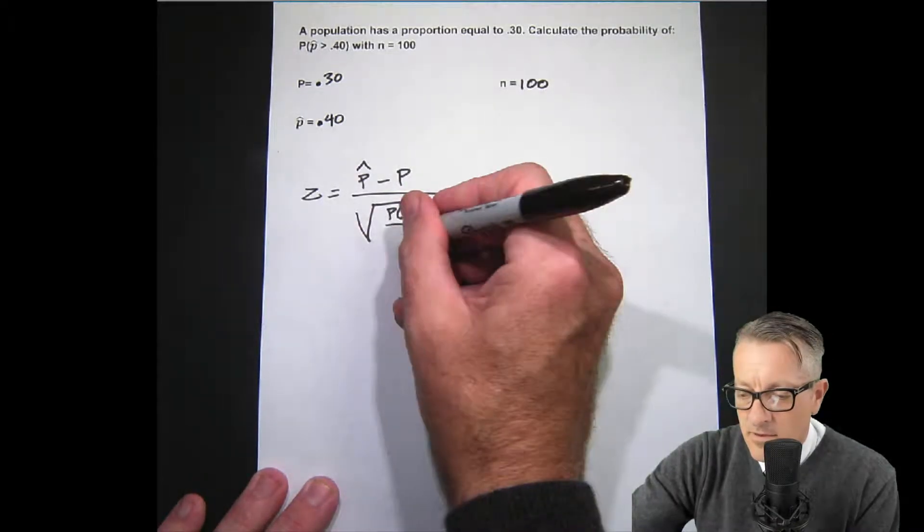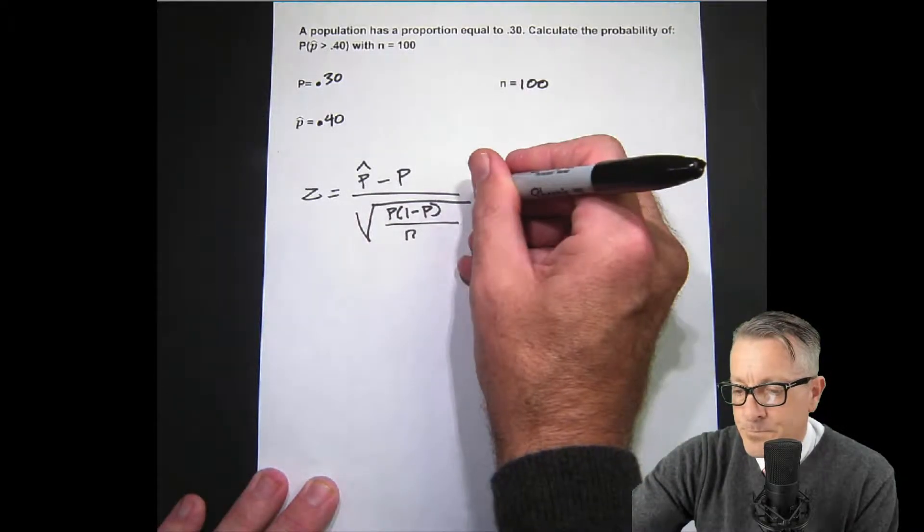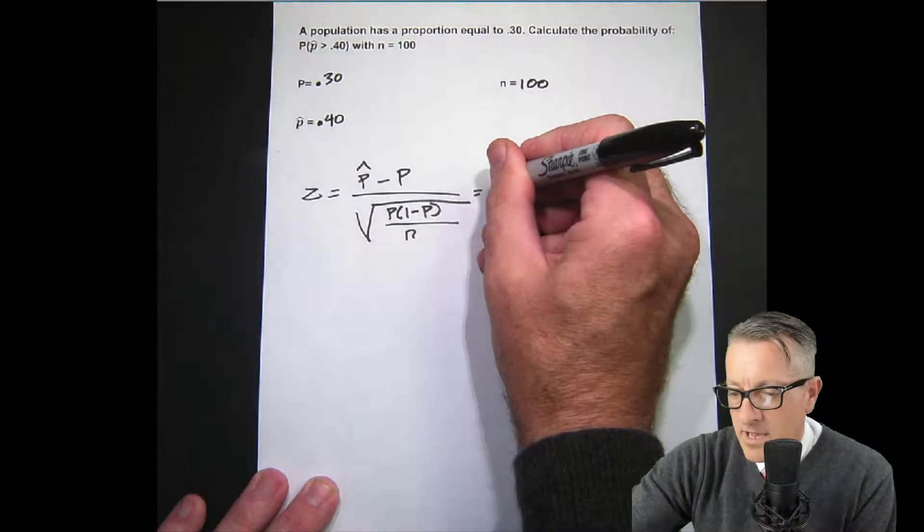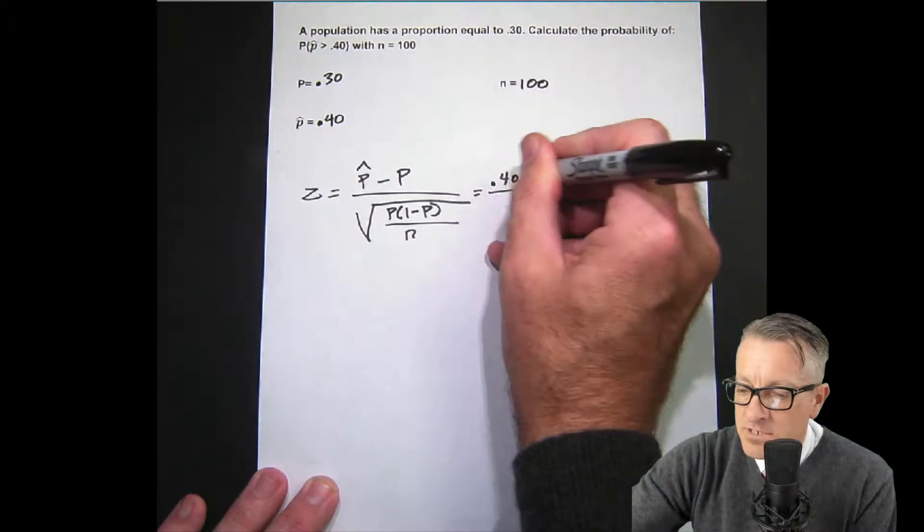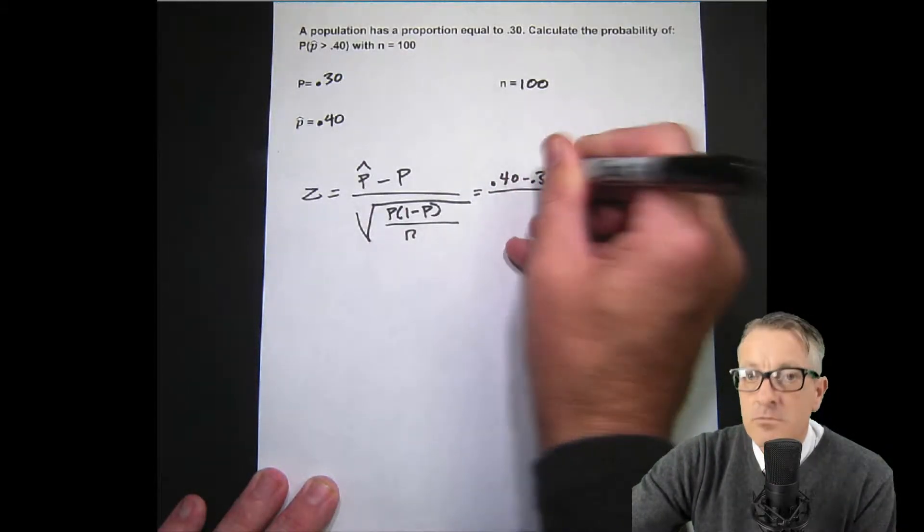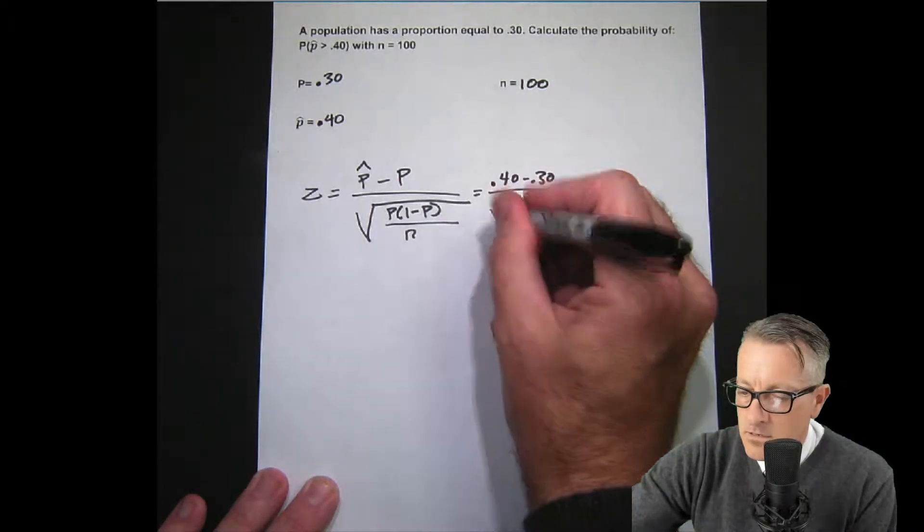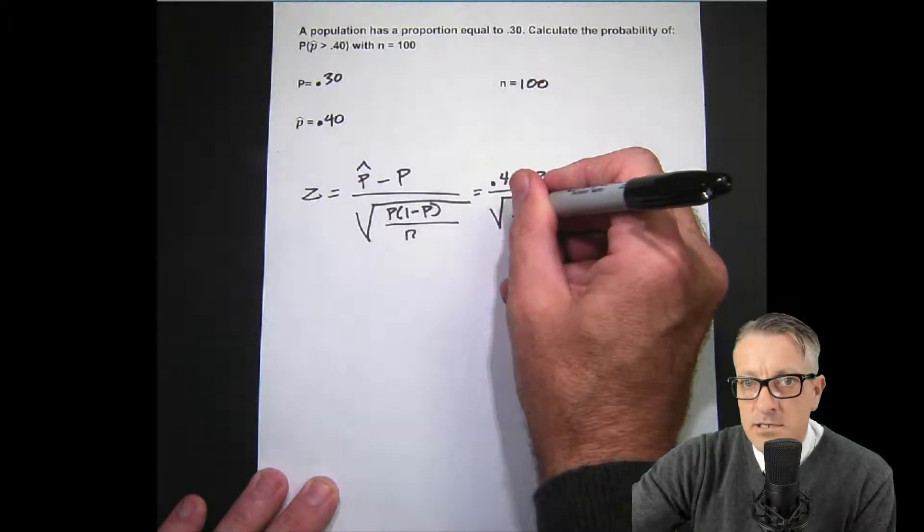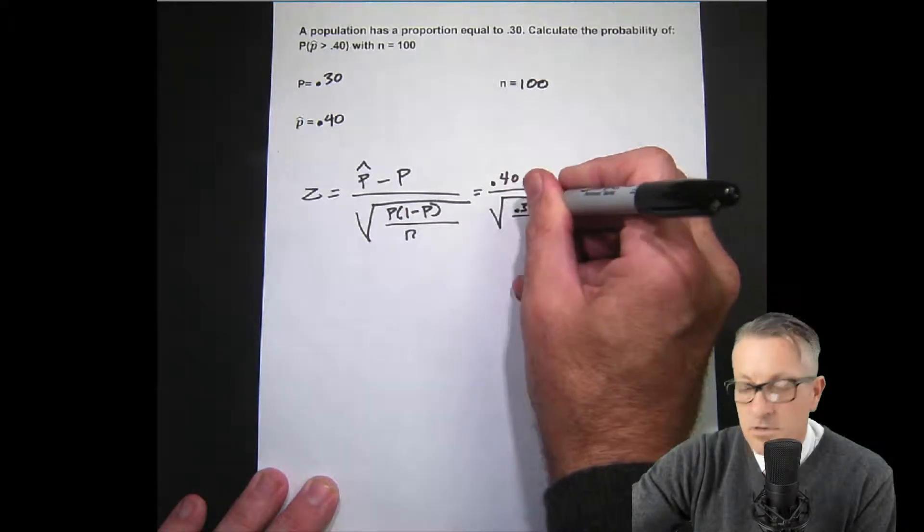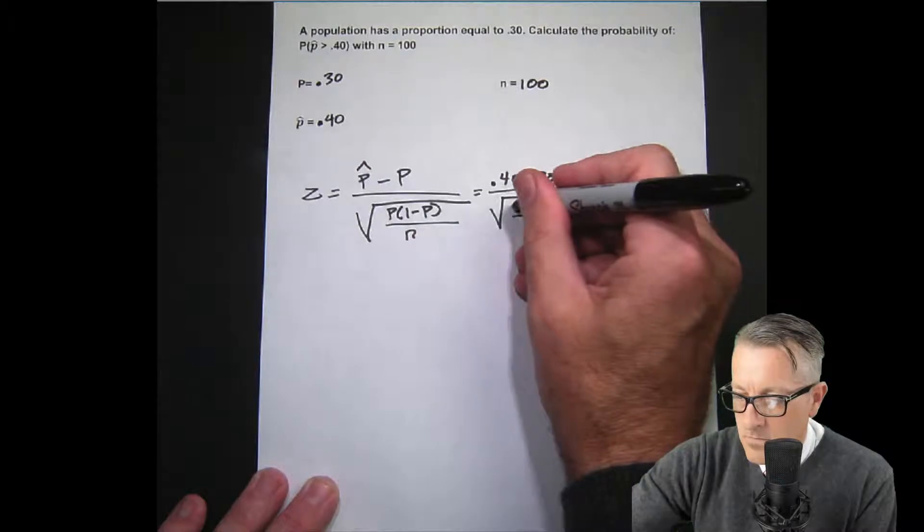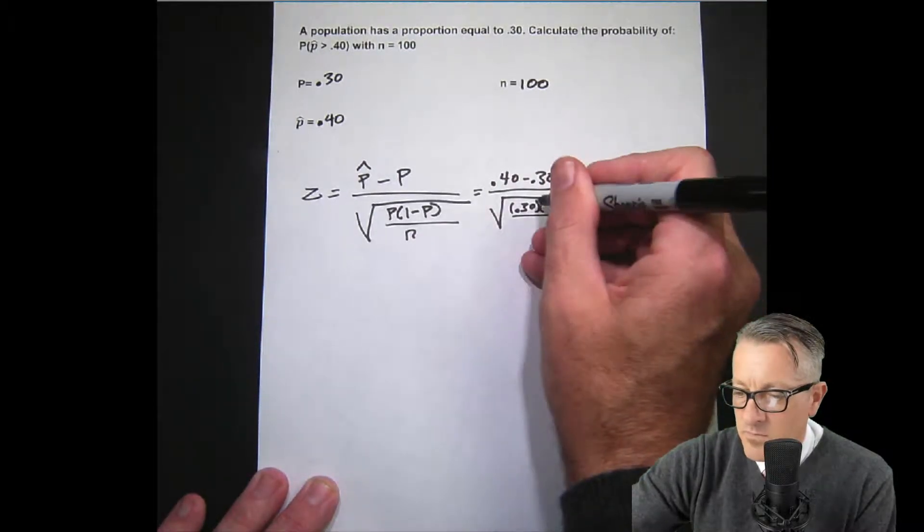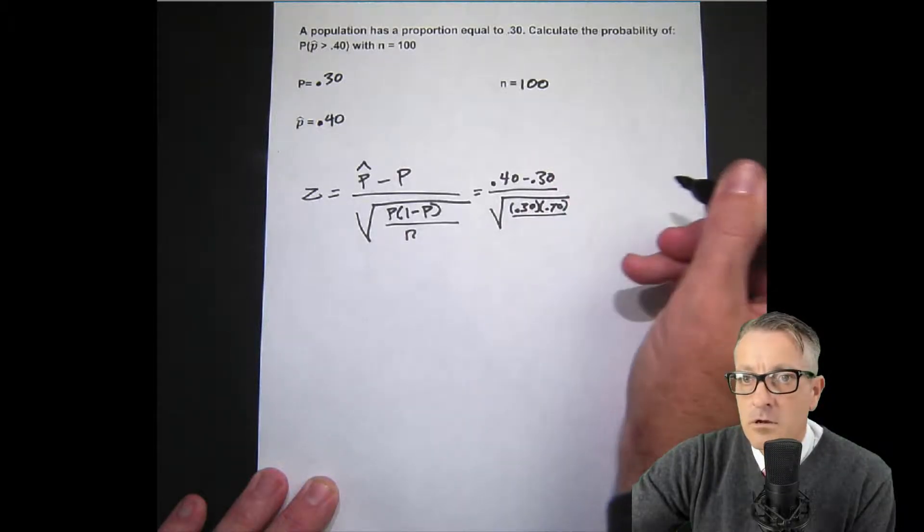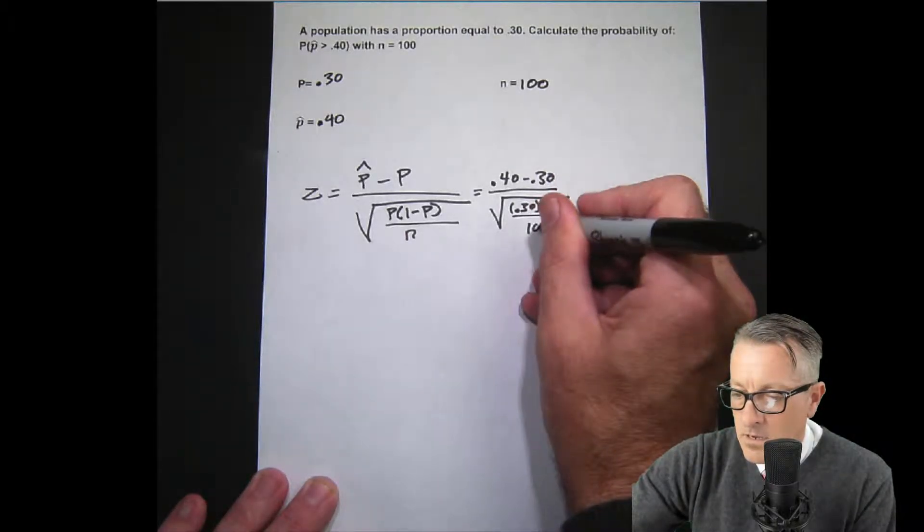We work this out. We have 0.40 subtract 0.30, and then we have 0.30 in parentheses just to show where it's not the same thing, but we're multiplying by 0.70, then 100.